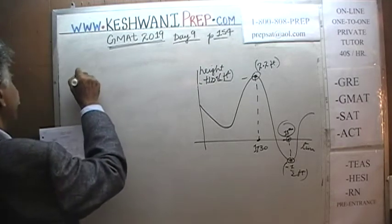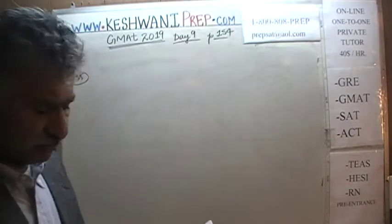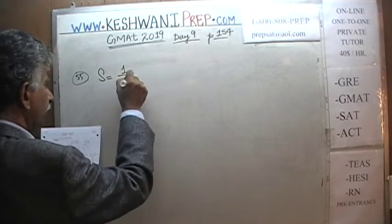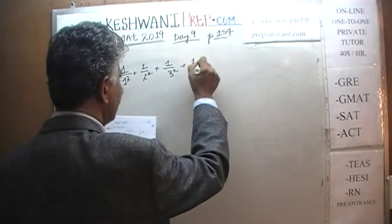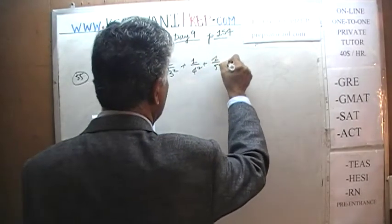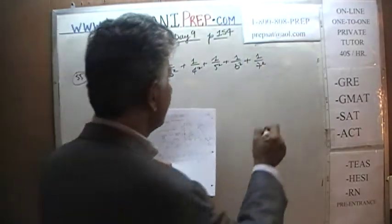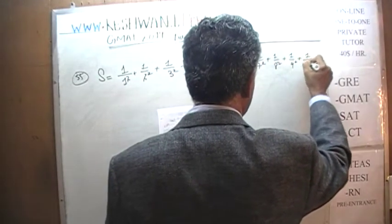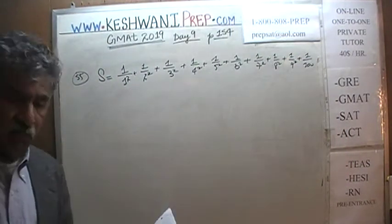The next problem gives us a series that looks like this. We are told that the sum of a series is equal to 1/1² + 1/2² + 1/3² + 1/4² + 1/5² + 1/6² + 1/8² + 1/9² + and finally 1/10². I am writing all of them out for a reason — just be patient. Our job is to figure out what the sum is.